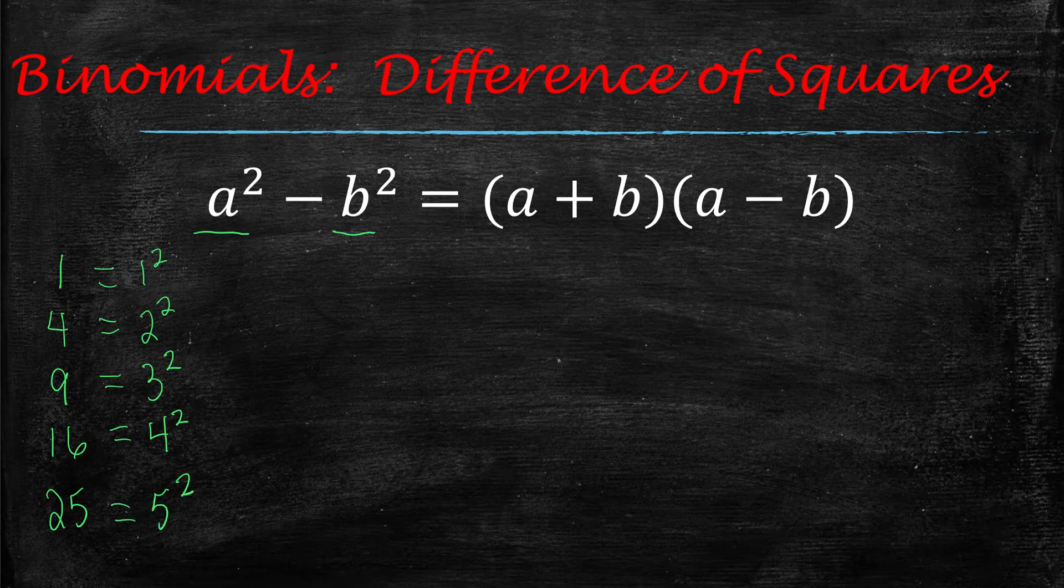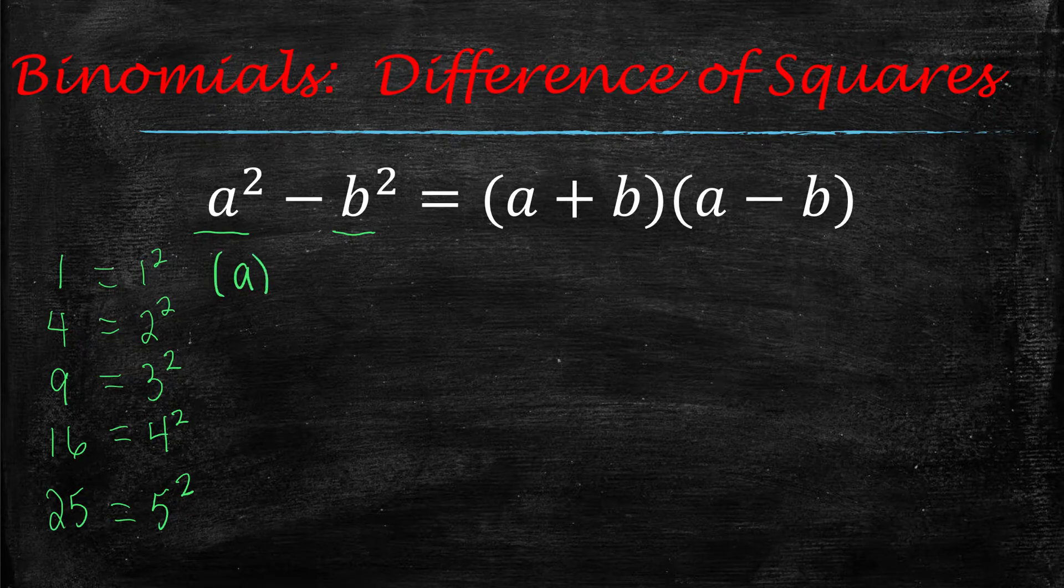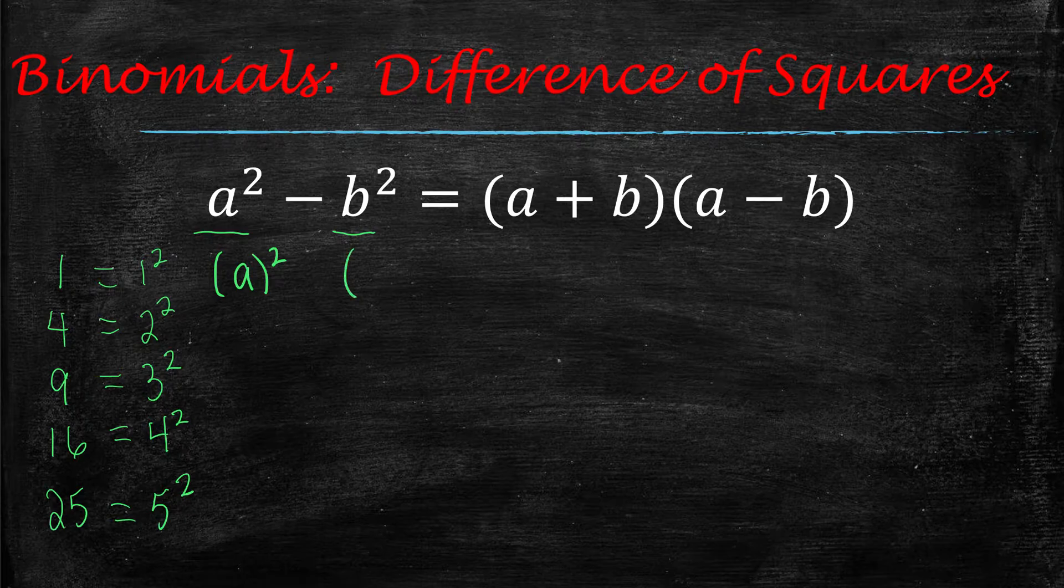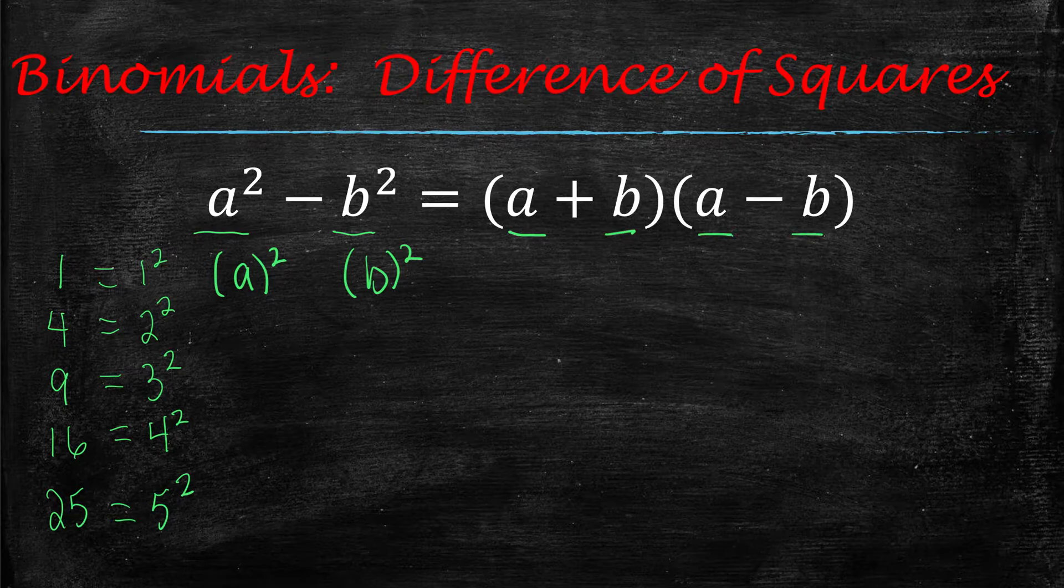So when you see that, how it factors is you take whatever is squared, so take whatever is being squared here, and whatever is being squared here, and you write it in parentheses, a with a plus b, and then also a minus b.